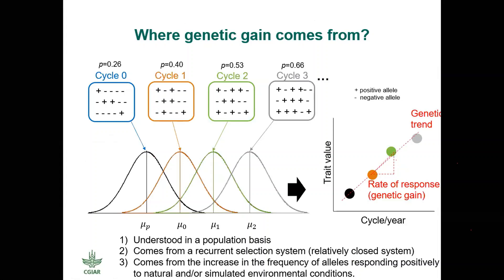Going back to the comments from Prasanna, I would like to start this discussion on where genetic gain comes from. When we talk about the rate of response to selection or genetic gain, we refer to the change in breeding value or genetic value that is occurring for a particular trait of interest in a period of time. The genetic trend is just that — the actual trend you can observe over many cycles. This can be linear or nonlinear, and it is really when the genetic trend is linear that you can actually calculate the genetic gain or the rate of response to selection.